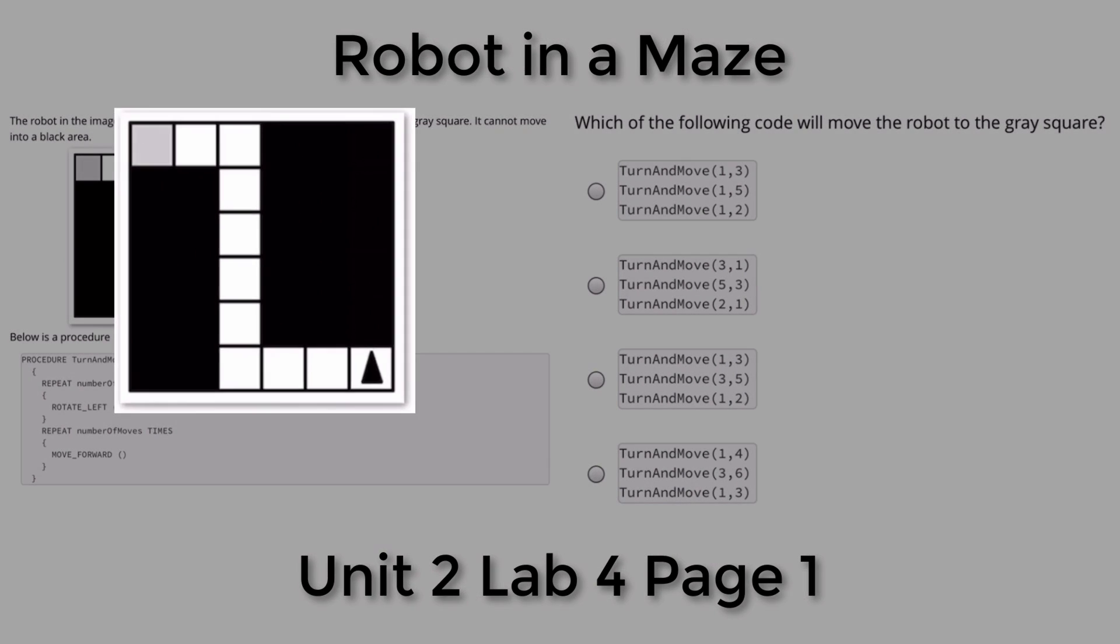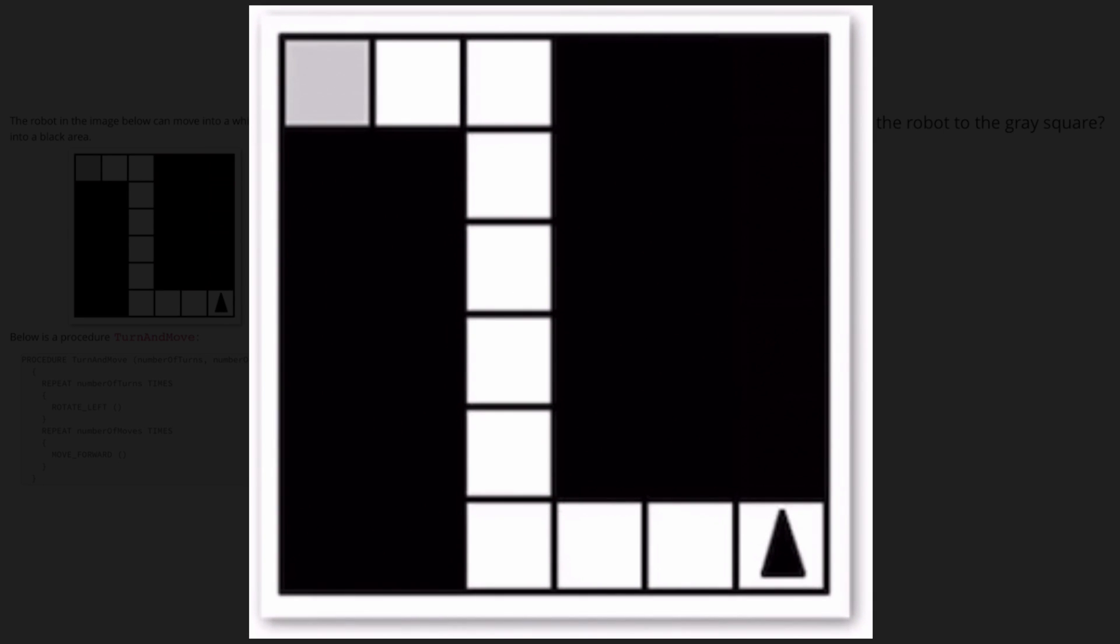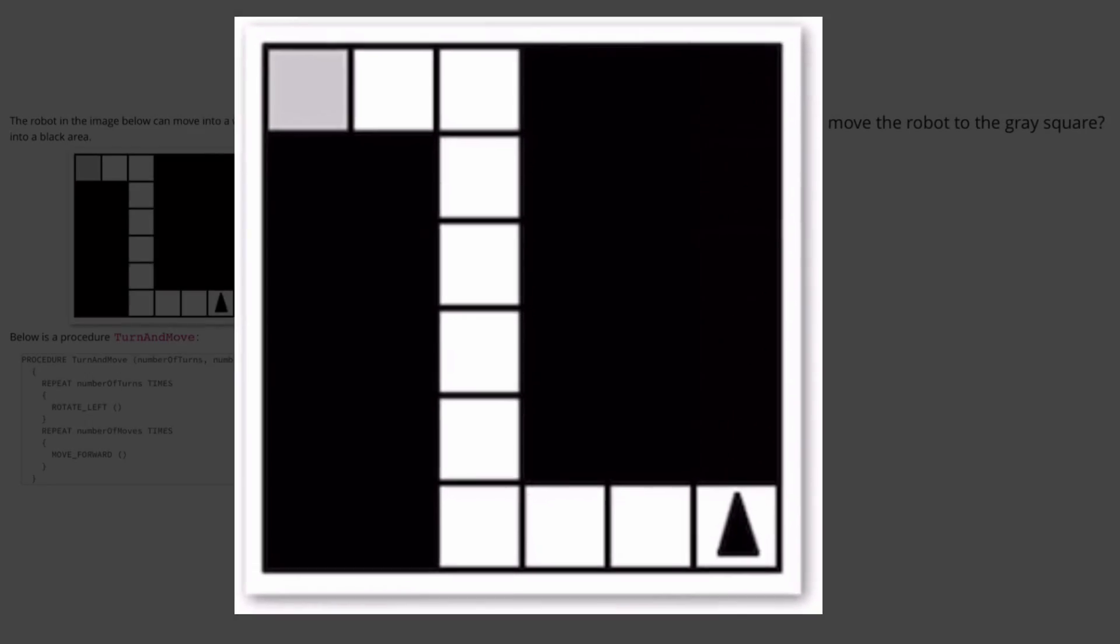So let's see. There are a couple of ways to solve this problem. We have to get the robot in the bottom right of the maze all the way to the gray box in the top left.